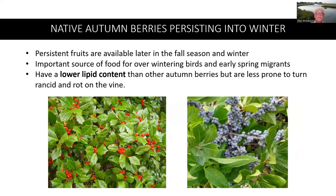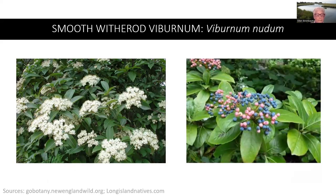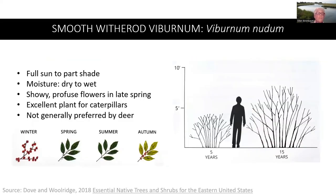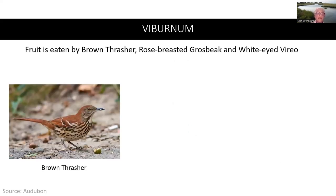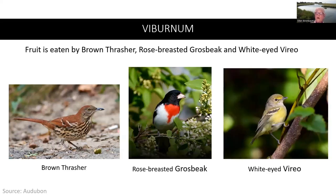The last category are native autumn berries persisting into winter. Persistent fruits are available later in the fall season and winter, and are an important source of food for overwintering birds and early spring migrants. They have a lower lipid content than other autumn berries but are less prone to turn rancid and rot on the vine. The smooth witherod viburnum is a medium to large shrub known for spring flowers, showy fruits, and good autumn color. It is an excellent plant for caterpillars and is not generally browsed by deer. The fruits of viburnums are eaten by brown thrasher, rose-breasted grosbeak, and white-eyed vireo.